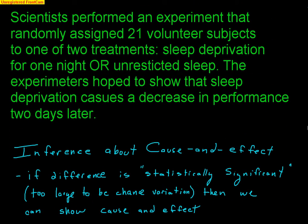The second type of inference is cause and effect inference. Scientists performed an experiment that randomly assigned 21 volunteer subjects to one of two treatments: they were sleep deprived for one night, or they had unrestricted sleep. The experimenters hoped to show that sleep deprivation caused a decrease in performance two days later. Because we randomly assigned half the people to each condition, and as long as we have the four major pillars of the experiment, we can show a cause and effect relationship — that being sleep deprived will cause a decrease in performance.